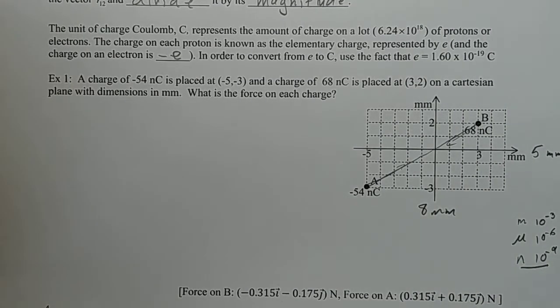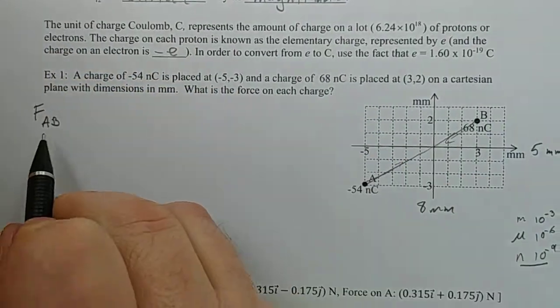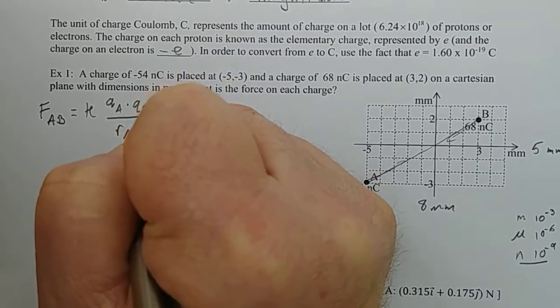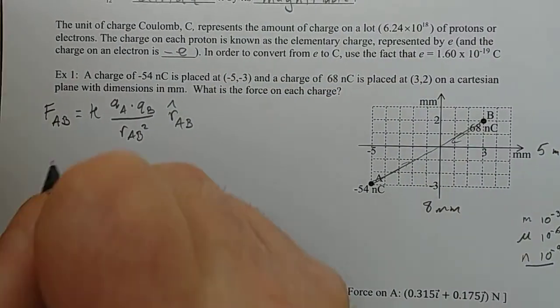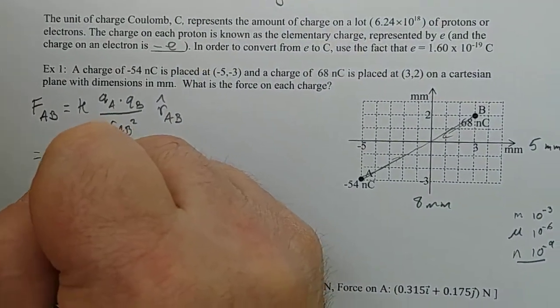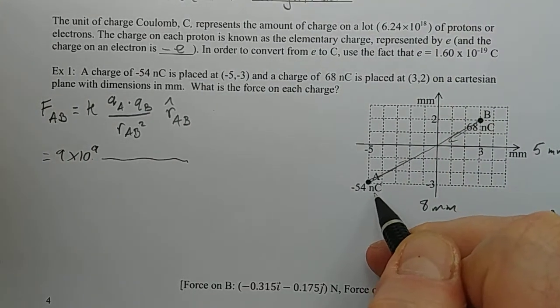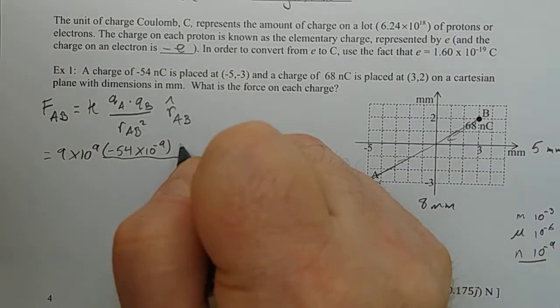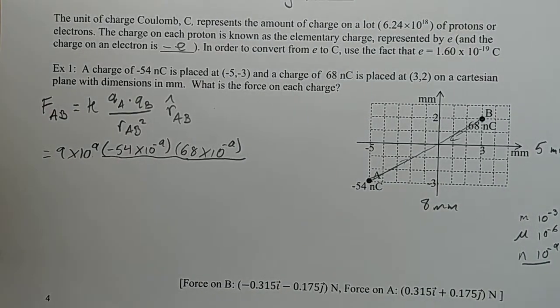I know that I'm going to be using this formula, the force of A on B. FAB is equal to K times the charge of A times the charge of B over the radius from A to B squared times the unit vector from A to B. Let's start filling this in. What is K? K is 9 times 10 to the 9. And QA is negative 54 times 10 to the negative 9.